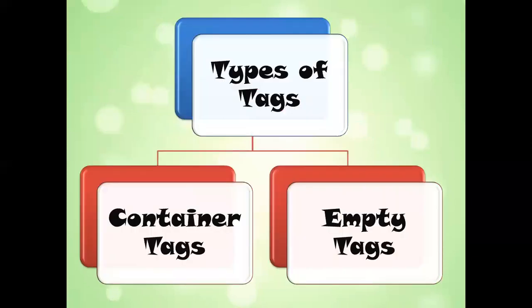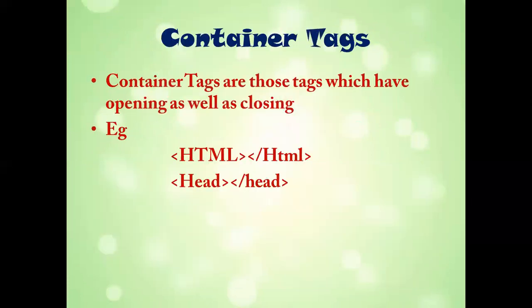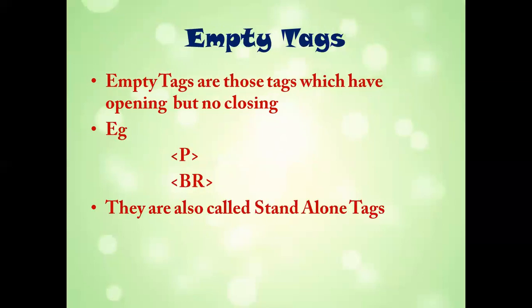There are two different types of tags: container tags and empty tags. Container tags are those which have both an opening and a closing tag. It is compulsory to close container tags because if you don't, the effect of the opened tag will remain throughout the document. Empty tags are those which have an opening but no closing — for example, the paragraph tag and the break tag. These are also called standalone tags.